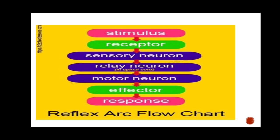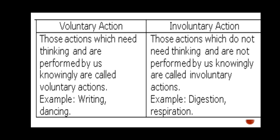If your finger subconsciously touches a candle, you immediately feel the sensation of touch — that is your receptor. Your finger is the receptor. And when you withdraw your finger, that same finger becomes the effector.